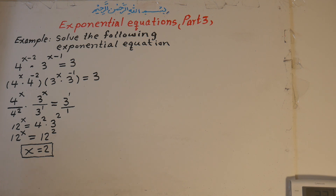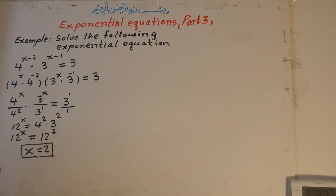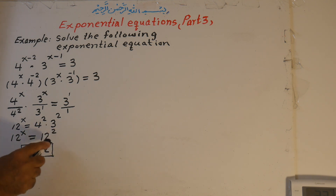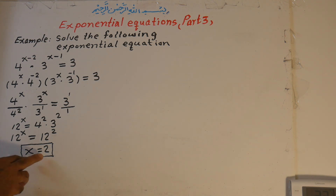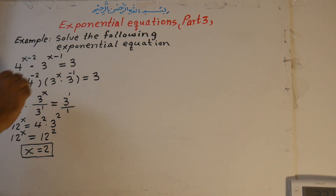The condition for equalizing: we can set the exponents equal to each other only if the bases are equal to each other. If the bases are not equal, we cannot equate the exponents. Both bases here are 12, so we can set x equal to 2. And x equals 2 is the solution. If we plug x equals 2 back into the equation, the left side becomes equal to the right side.